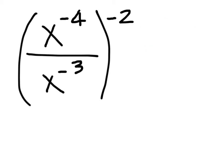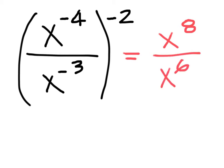The next problem gives x to the eighth over x to the sixth. This can be simplified further: since we have x over x, we subtract the exponents. Eight minus six gives x squared. One student initially said x to the fourteenth, but the correct operation when dividing is subtraction, so the answer is x squared.